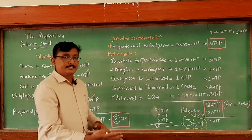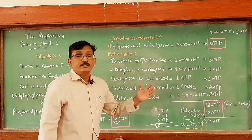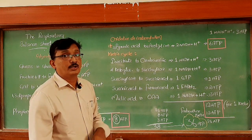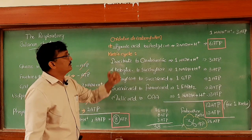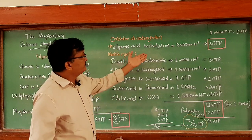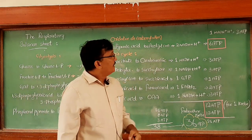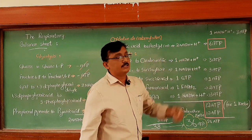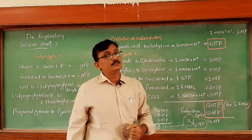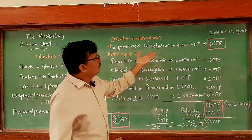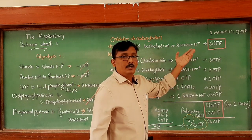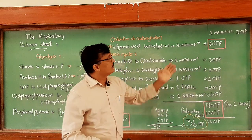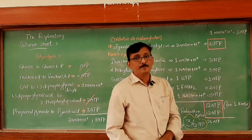Now let us take the next step — oxidative decarboxylation of pyruvic acid. When pyruvic acid is produced at the end of glycolysis, it undergoes oxidative decarboxylation and converts into acetyl coenzyme A. For each pyruvic acid, 1 NADH+H+ is formed. Since there are 2 pyruvic acid molecules, we get 2 NADH+H+, which equals 6 ATP molecules.